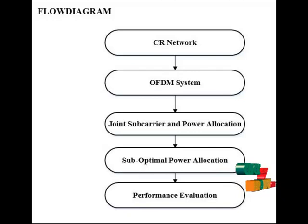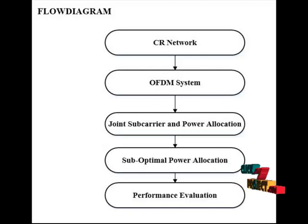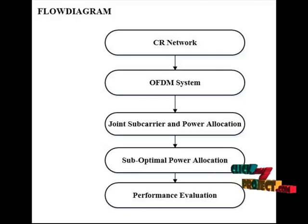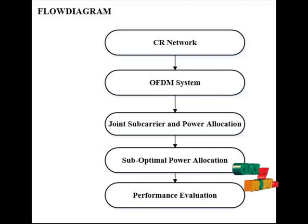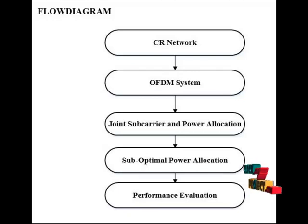The CR network consists of three types: underlay, interwave, and overlay. If the CR is constrained to cause minimal interference to non-cognitive systems, it is called underlay. The CR that exploits spectral holes to avoid interfering with non-cognitive radio systems is called an interwave system. When CR also enhances the non-cognitive transmission, it is called the overlay spectrum system.